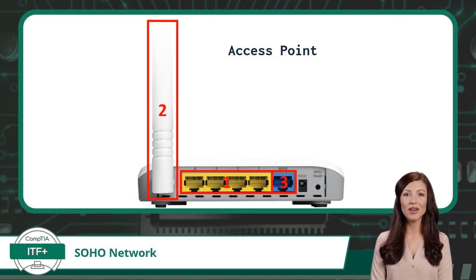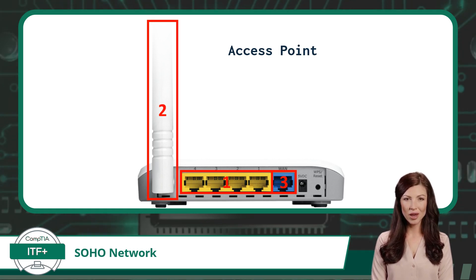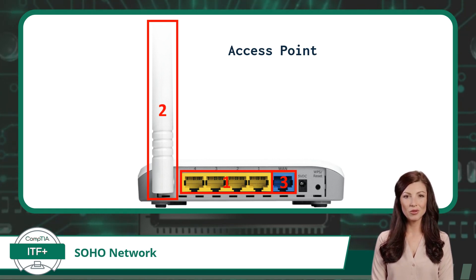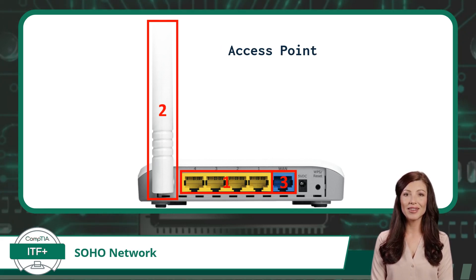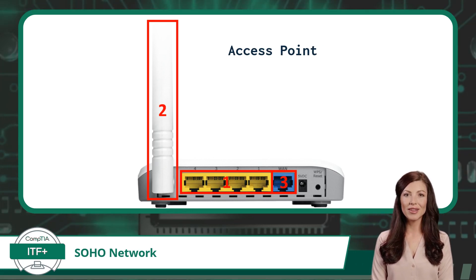Next, we have the access point. As a refresher, the access point is a network device that allows wireless communications between devices in a network. And yes, the SOHO router has a built-in access point too. It may not support as many wireless clients as an enterprise access point, but it will still function the same. The SOHO router displayed here has an antenna inside box number two that can transmit and receive Wi-Fi signals.